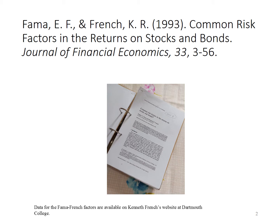The title of the journal is 'Common Risk Factors in the Returns on Stocks and Bonds,' published in the Journal of Financial Economics. This photo shows my collection of the articles at home. I encourage you to search for the original article and read it to broaden your knowledge. Data for the Fama-French factors are available on Kenneth French's website at Dartmouth College — you can search the internet and take a look.